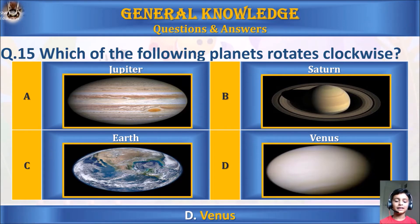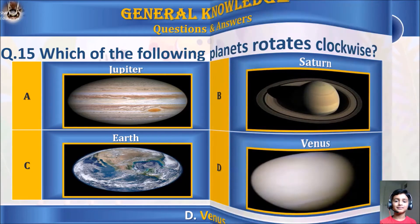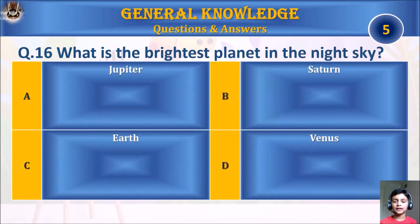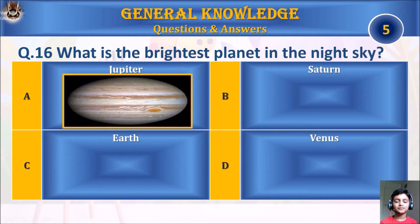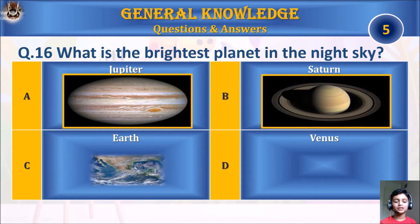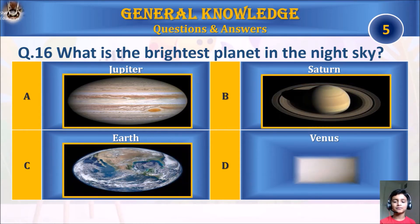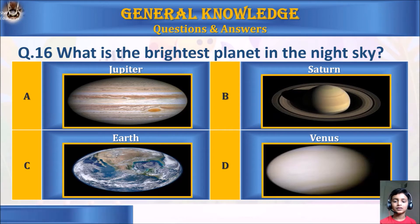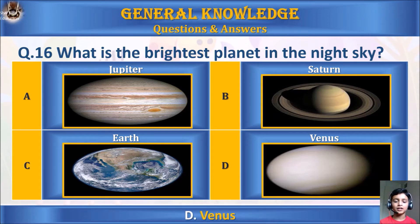The answer is A. Venus. Question 16: What is the brightest planet in the night sky? Is it Jupiter? Is it Saturn? Is it Earth? Or is it Venus? Your time starts. The answer is Venus.